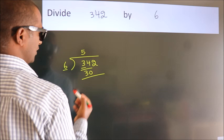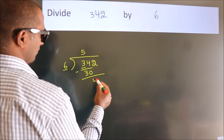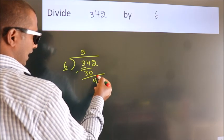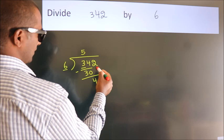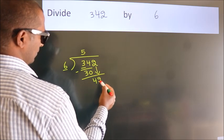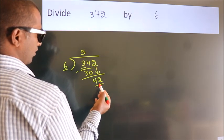Now we should subtract. We get 4. After this, bring down the beside number. So 2 down. So 42.